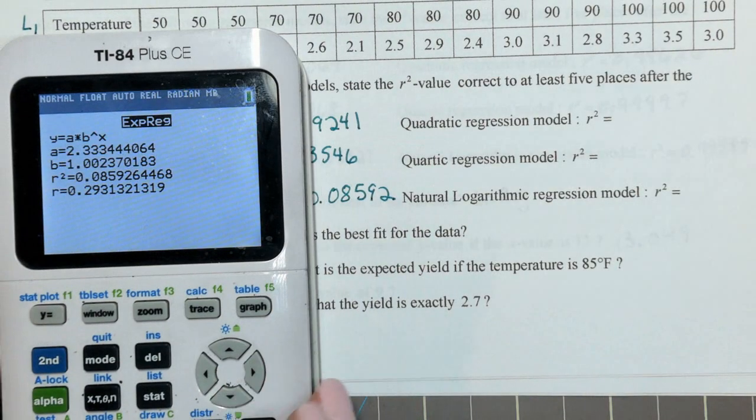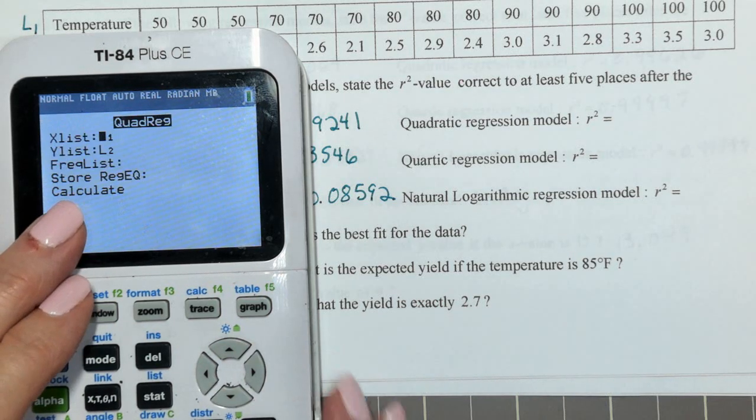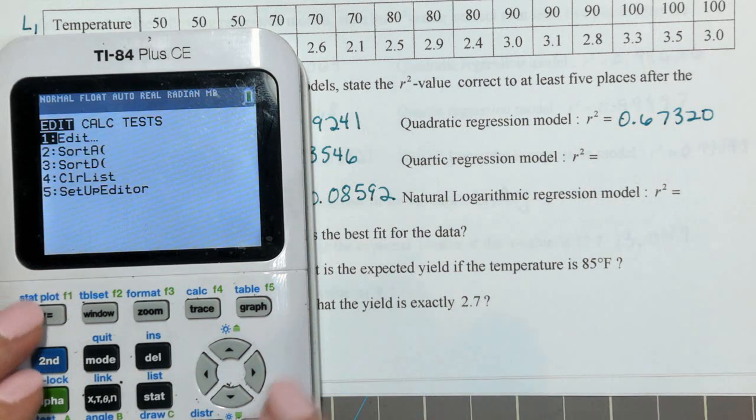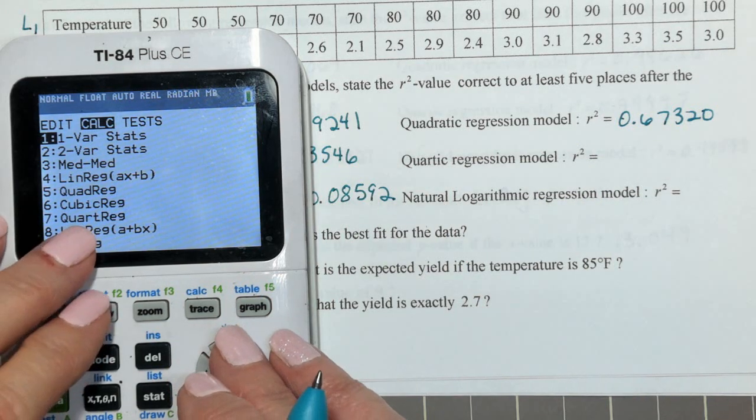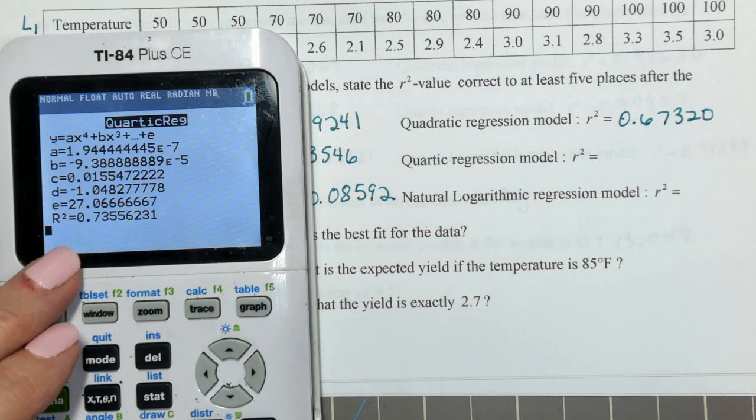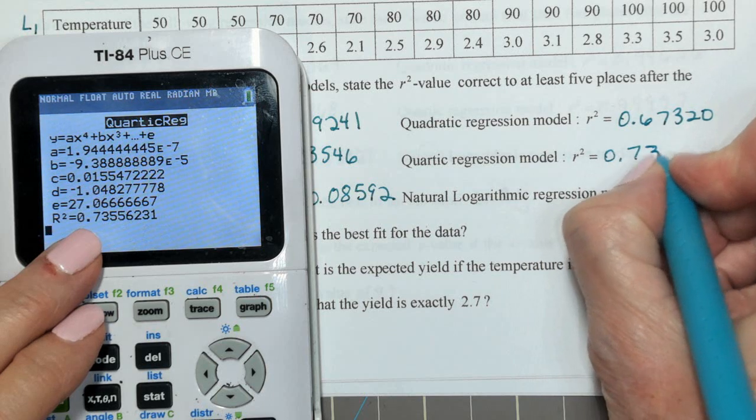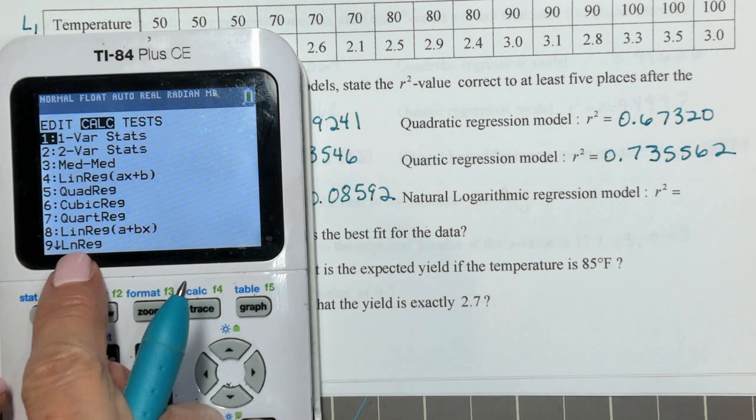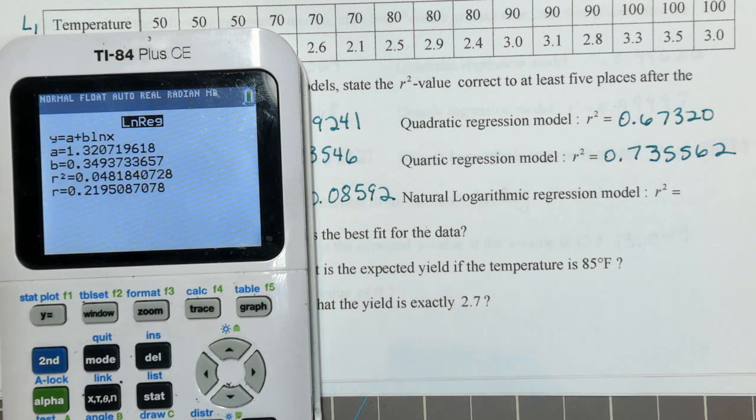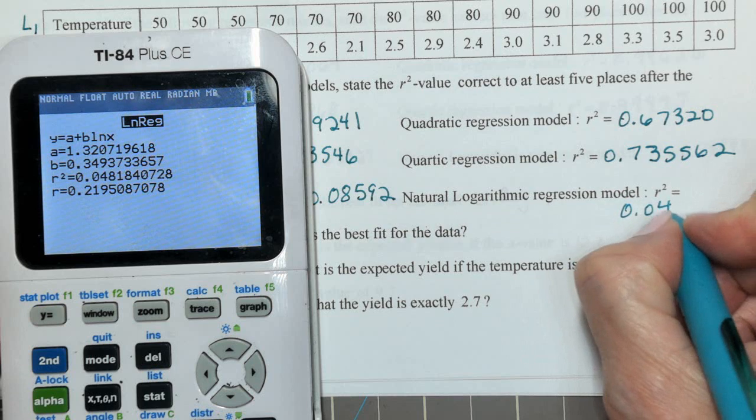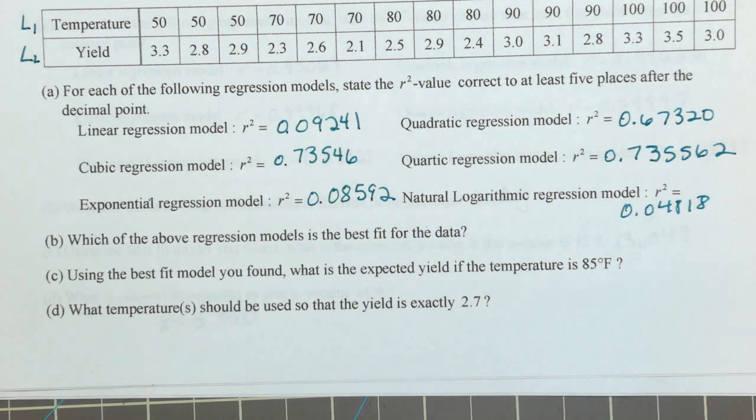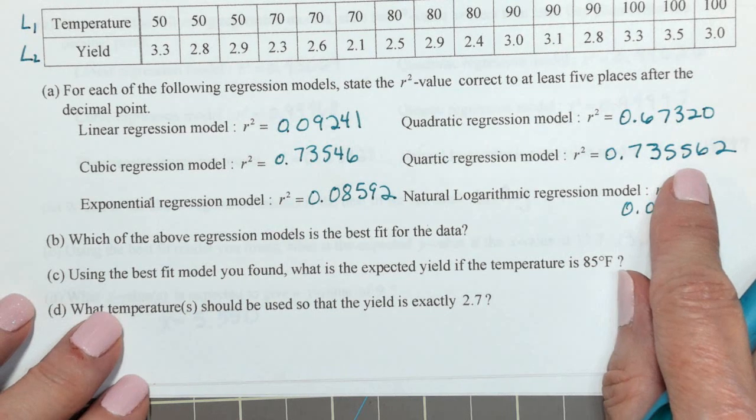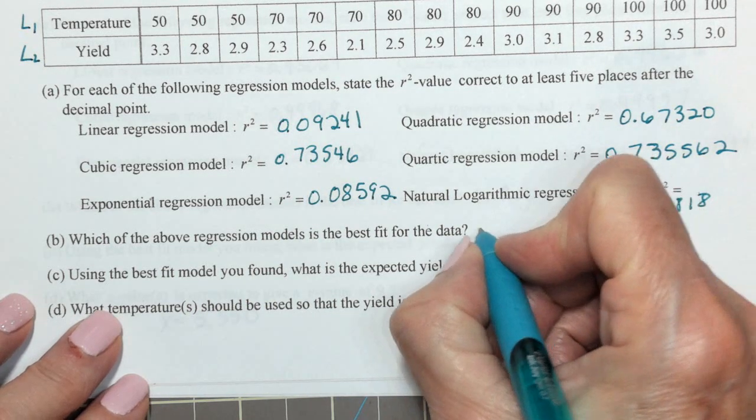Quadratic. Number five is quadratic. And I've got .67320. Quartic. Quartic is number seven. .735562. And natural log, that will be number nine. Another bad one. .04818. Which is the highest? These were very close, but the quartic regression model was just a little bit better than the cubic model. So, quartic.